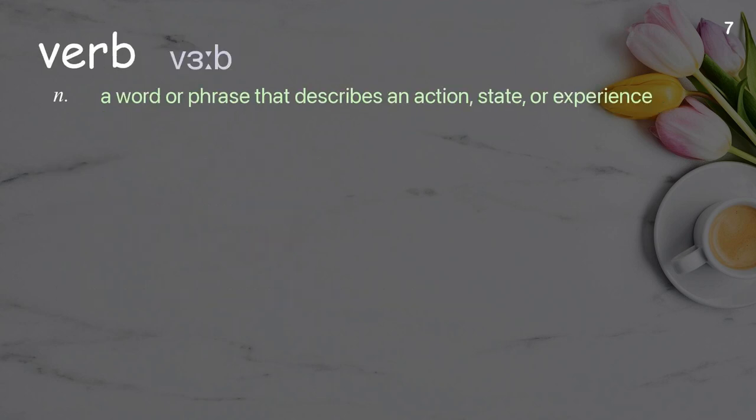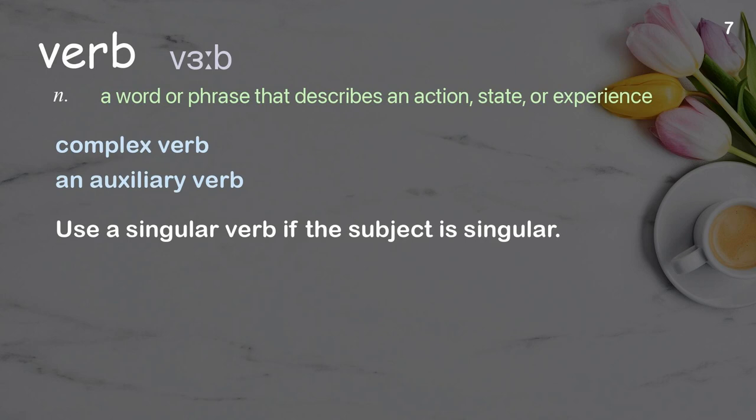Verb: a word or phrase that describes an action, state, or experience. Examples: complex verb; an auxiliary verb. Use a singular verb if the subject is singular.